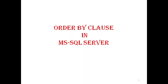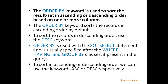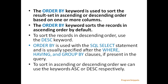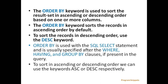Here we will see the ORDER BY clause in SQL Server. The ORDER BY keyword is used to sort the result set in ascending or descending order based on one or more columns. The ORDER BY keyword sorts the records in ascending order by default. To sort the records in descending order, use the DESC keyword.